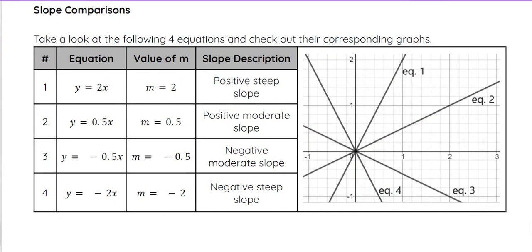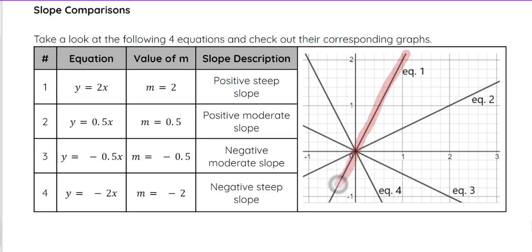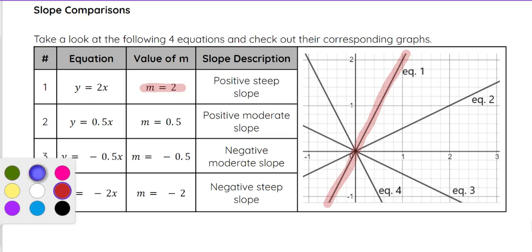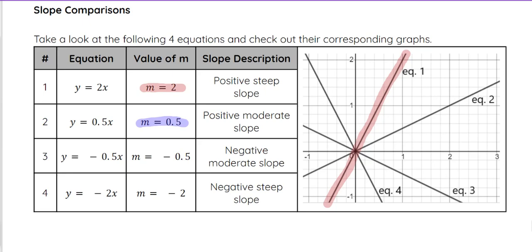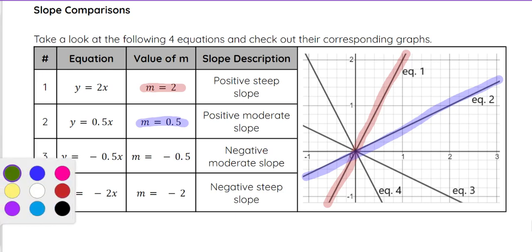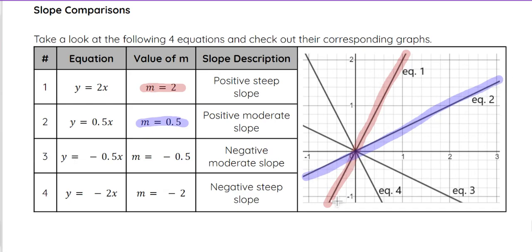Let's look at some of those comparisons in this example. Equation one has a slope of two, and equation two has a slope of one half. Notice that the two has a much steeper slope. If you think about those as hills or hiking, I would want to hike the blue one because it's not as steep as the red one. So a positive steep slope would be like positive two, and a positive moderate slope — not as steep — would be one half.